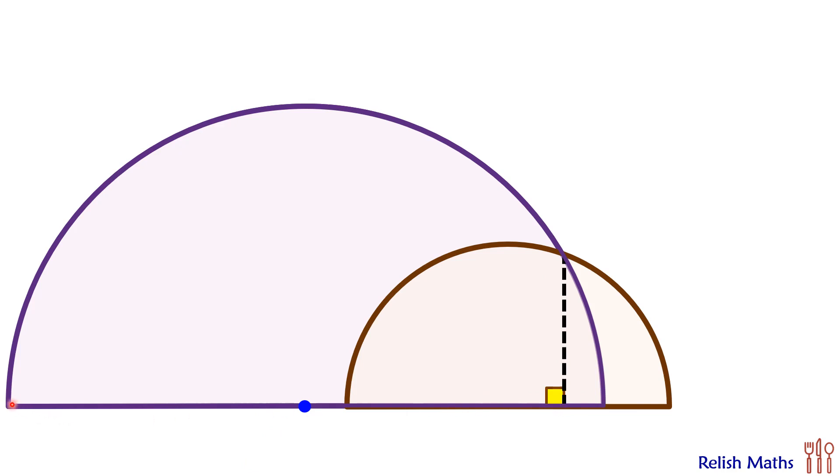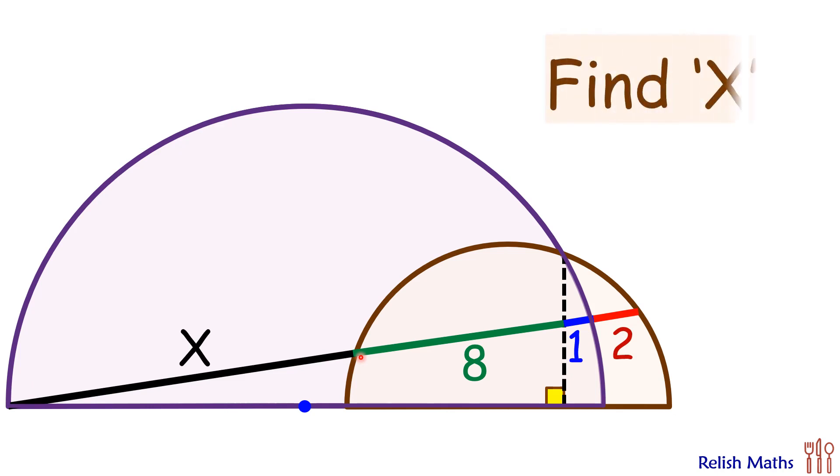From one end of the diameter, we are drawing a line segment which intersects at various points. Here the length of the green segment is 8 cm, the blue one is 1 cm, red is 2 cm, and the black one is x cm. We have to find its length, so the question is to find the value of x.